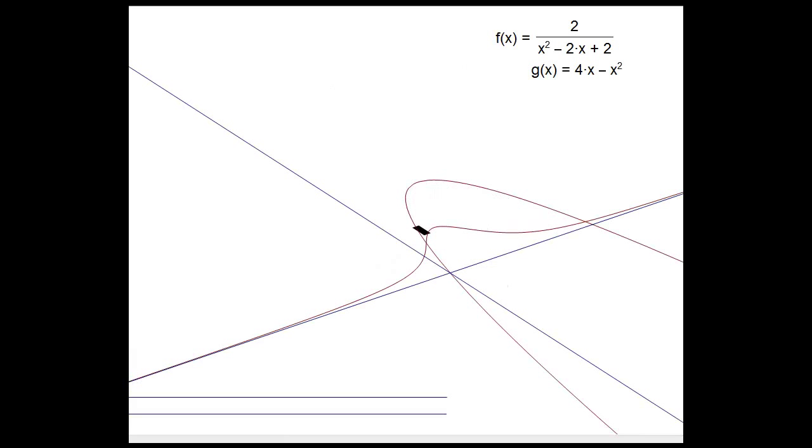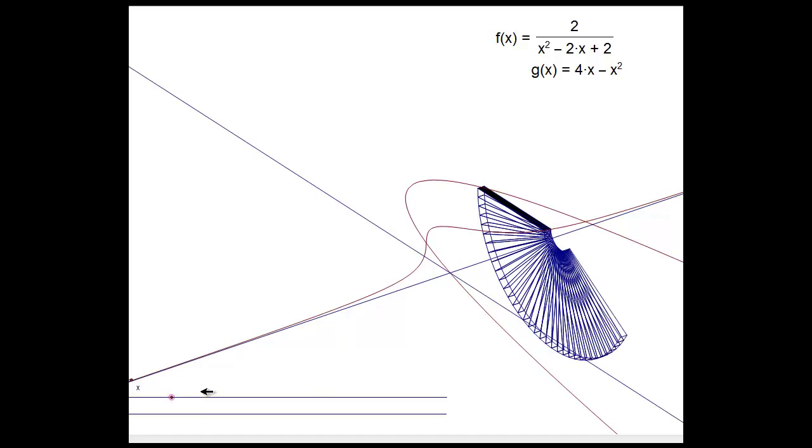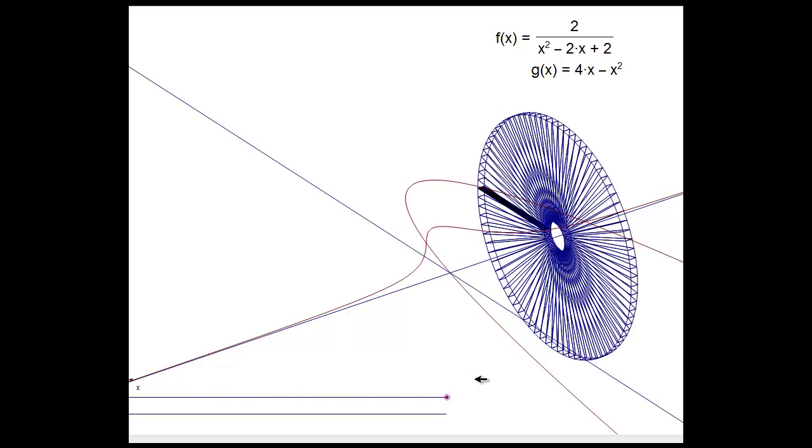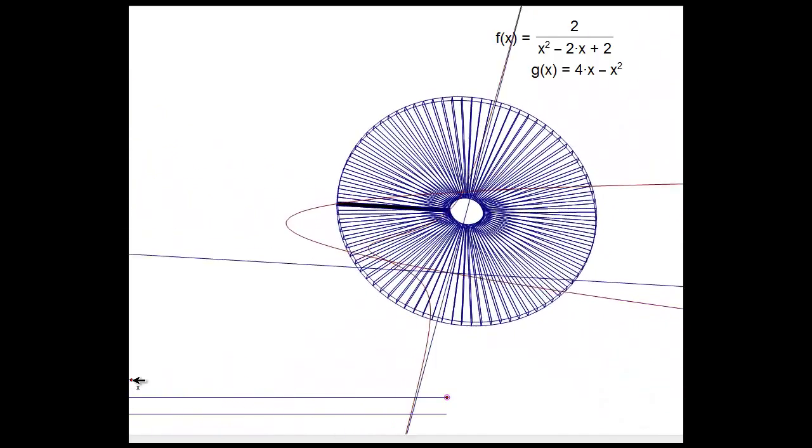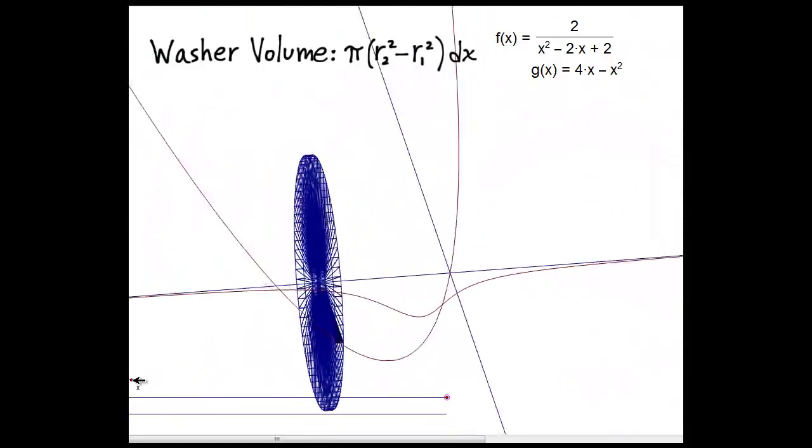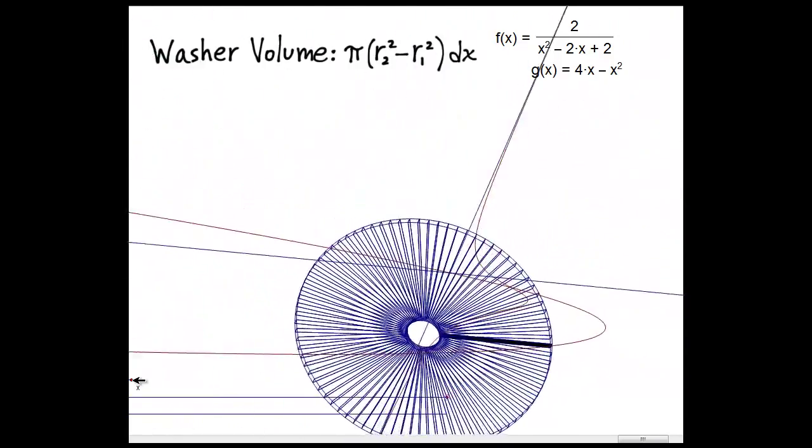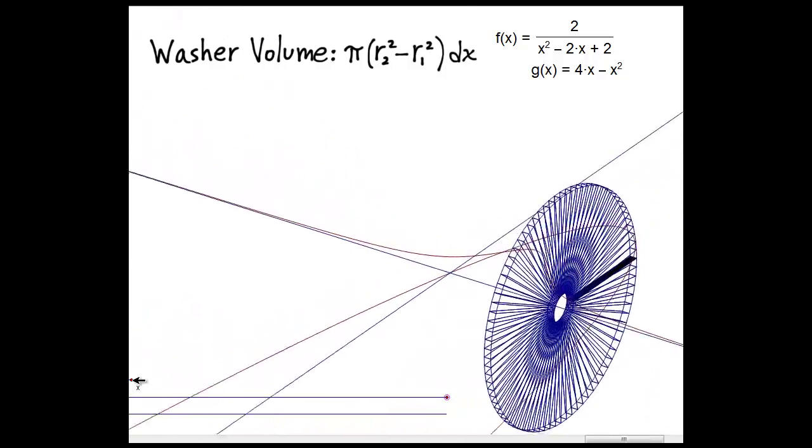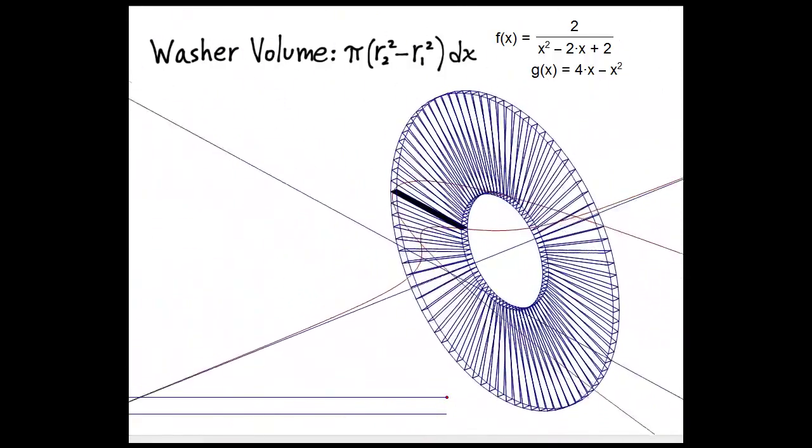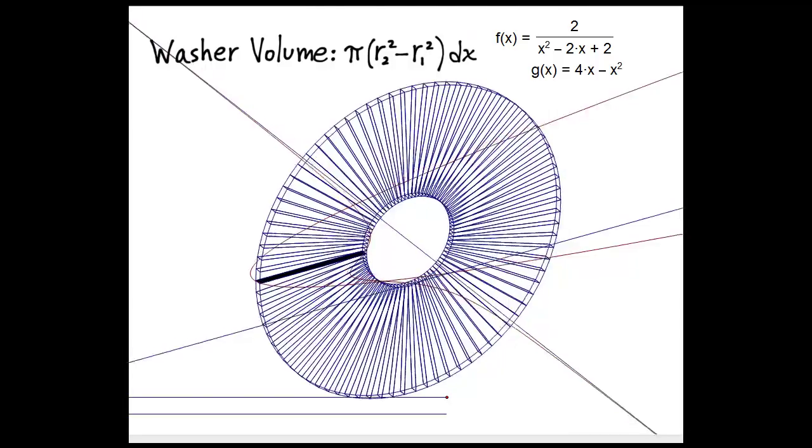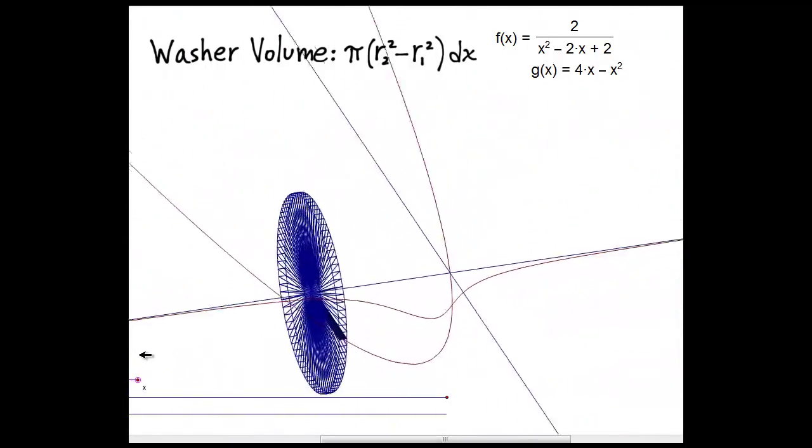Now we're going to review the idea of washers and shells. Here's a region that's sliced, and if you revolve the slice about the x-axis, you get a washer, because it's a vertical slice. Here are the different washers made from the different slices in that region.